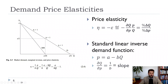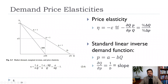Basically, eta is the percent change in quantity divided by the percent change in price. We can think of that in terms of partial derivatives: it's dQ/dP times P divided by Q. In our linear inverse demand — P equals A minus BQ — the dQ/dP is just 1 over B. We multiply that times P over Q, then substitute back in our linear inverse demand function, simplify, and get A over BQ minus 1.